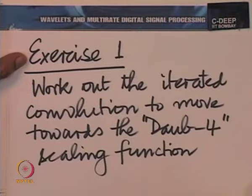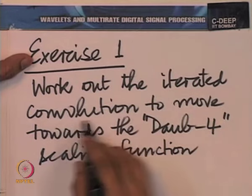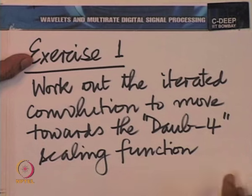Whether it is length 6, 8, or 10 filters, we know exactly how to carry out the iterated convolution: place the impulse response coefficients as uniformly spaced impulses, squeeze that set by a factor of 2, convolve with the first set, squeeze again by 2, convolve again, and continue. I leave as an exercise to complete this iterated convolution and move towards the Daub4 scaling function.